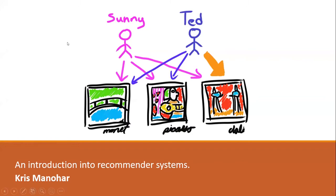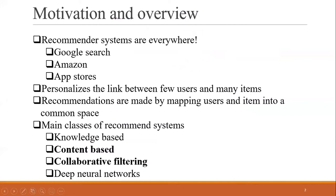So why study this? Recommender systems are everywhere — your Google search, your Amazon search, your App Store recommendations, Facebook ads — anything where it provides that personalized experience would have some sort of recommender system or similar type of algorithm running in the background. And essentially what that does is it personalizes the link between the users and the item.